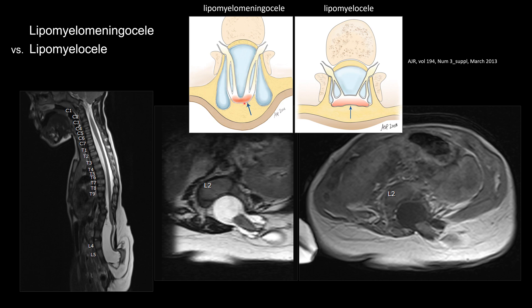Whether or not the interface is lying outside of the canal versus the interface lying within the canal, as demonstrated on this diagram from AJR. Both lesions are closed dysraphism, so the skin should remain intact. Otherwise, there will be myelomeningocele versus myelocele.